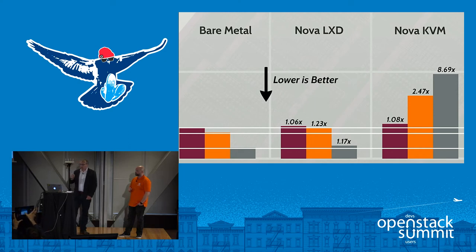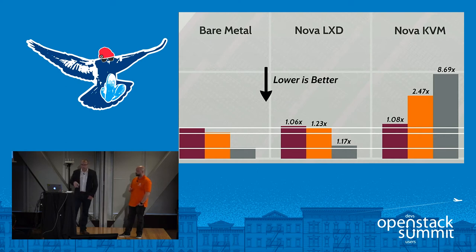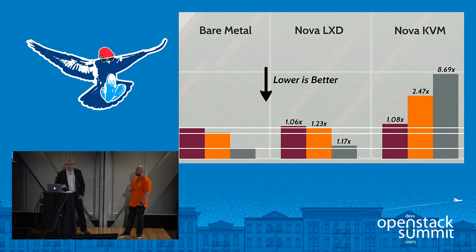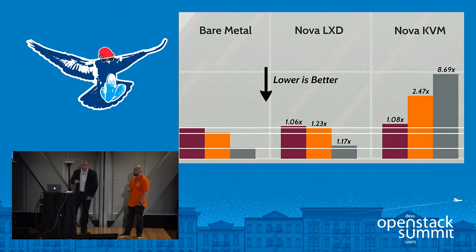This makes a strong case for being able to essentially forklift applications from traditional virtualization — VMs, KVM — into machine containers hosted by LXD and Nova LXD. It's important to note that these containers are full machine, full system containers. You get syslog, you have SSH, and all the things you would have in a metal deployment or virtualized KVM machine — in contrast to other container technologies which provide application-level containment. This means you can take many legacy applications with essentially zero modification and move them from a traditional VM into a Nova LXD instance.